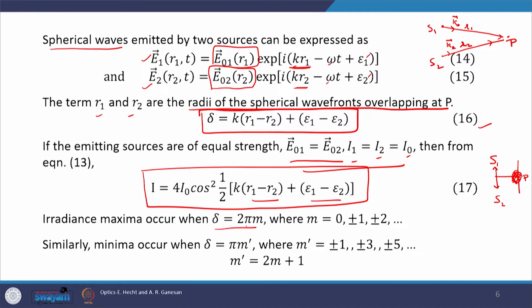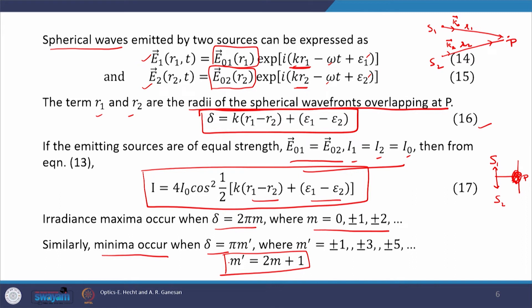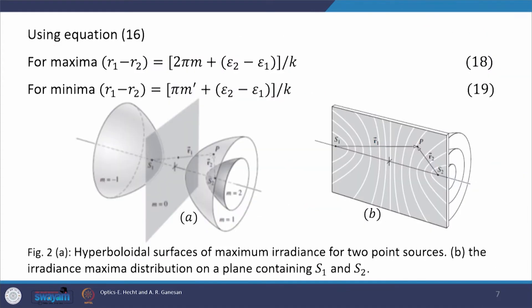Maxima occur when δ = 2mπ, where m = 0, ±1, ±2 (integer). Minima occur when δ = mʹπ, where mʹ = ±1, ±3, ±5, and so on — i.e., odd integral multiples of π. Substituting these back into equation 16, we get expressions for maxima (equation 18) and minima (equation 19). On the right-hand side of both equations there is a constant quantity.